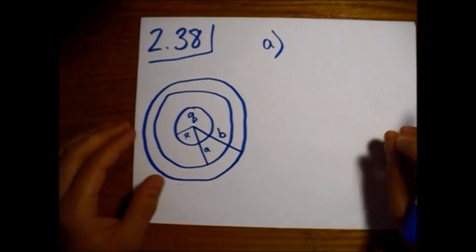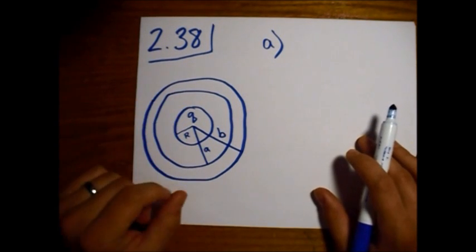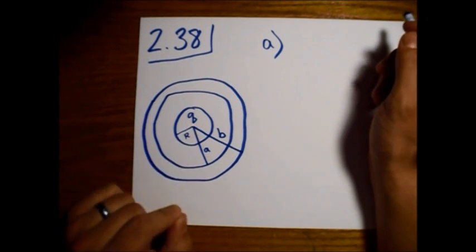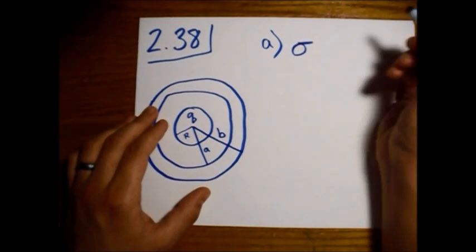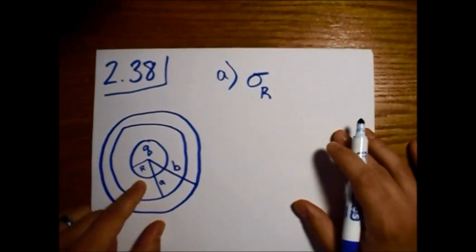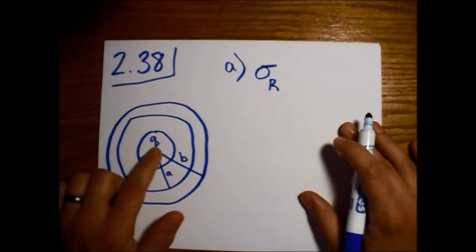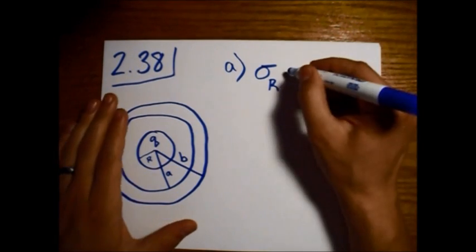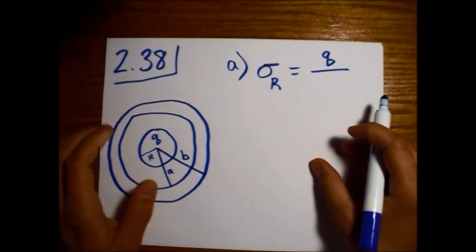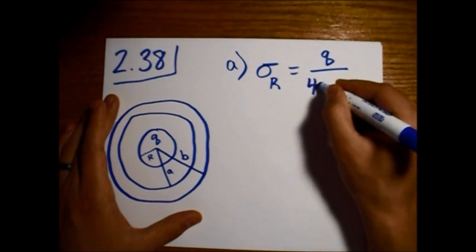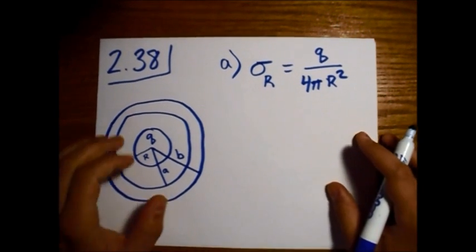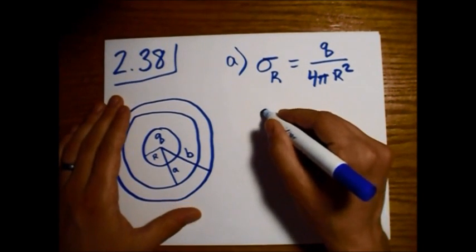The charge will spread evenly on each surface. On the inner sphere, we have charge Q and it's going to spread over the surface area of the sphere, which is 4π R². So the surface charge density at the outer surface of the inner sphere is Q divided by 4π R².